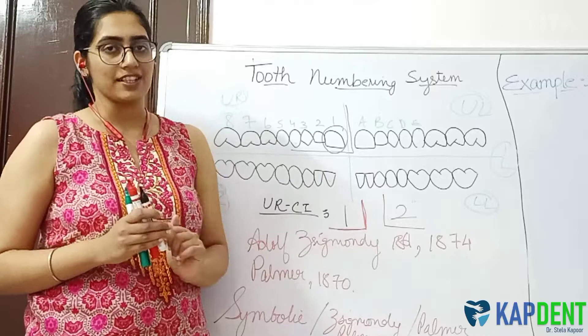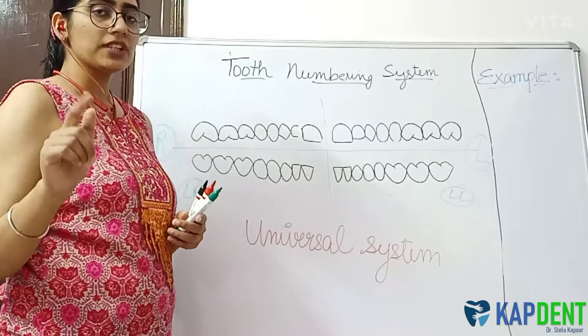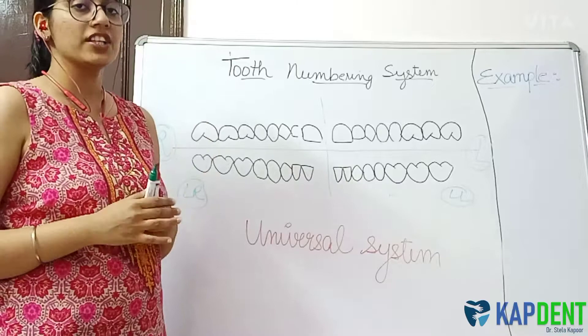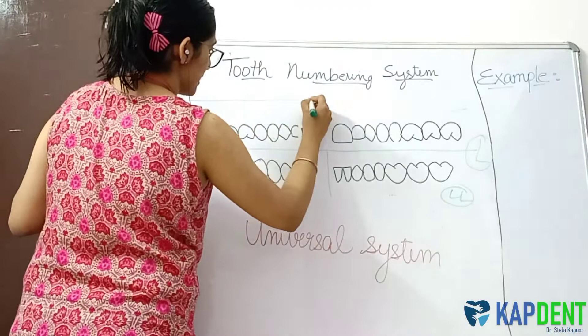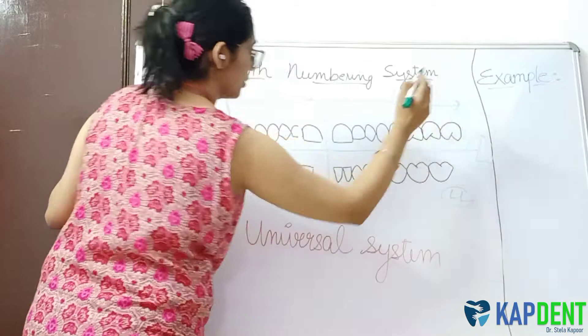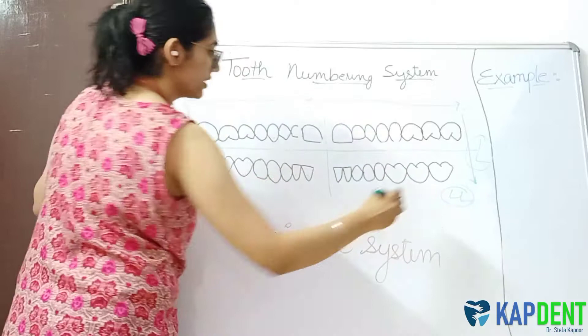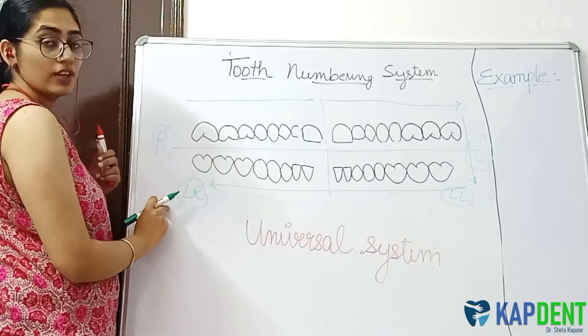In the universal numbering system, each and every tooth has its own unique number and no symbols are used, making it much easier to record digitally with no confusion. The direction followed starts from the third molar of the upper right quadrant to the central incisor, then from the central incisor of the upper left quadrant to the third molar. Then we go down to the third molar of the lower left quadrant and move all the way to the third molar of the lower right quadrant.